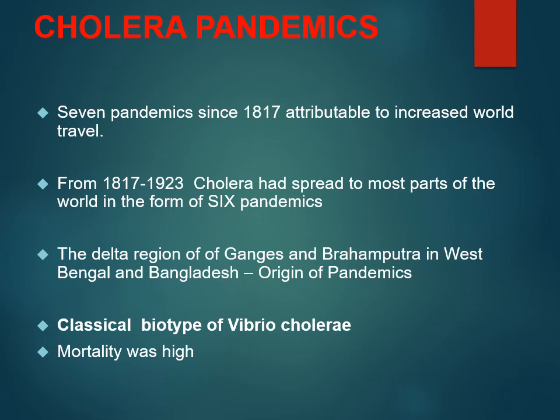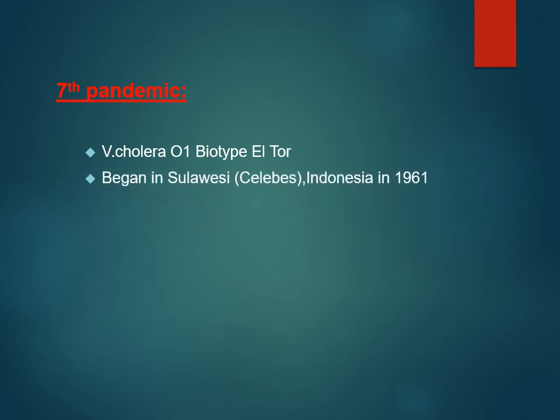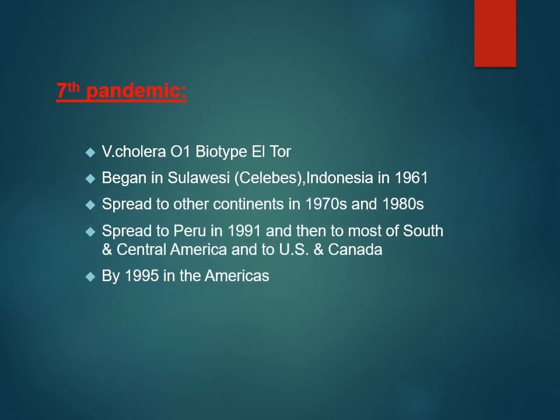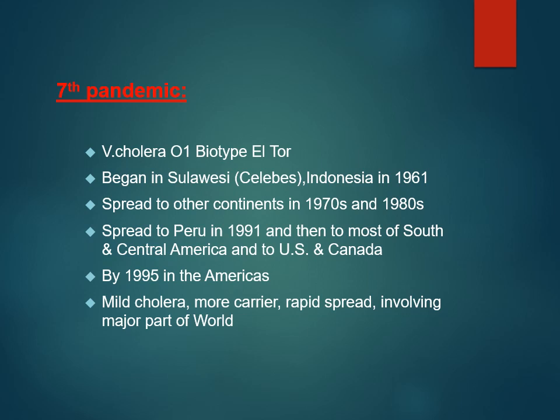The seventh pandemic was due to the El Tor biotype — the six previous pandemics were due to the classical biotype, but the seventh was due to El Tor. This pandemic did not start from India; it started from Indonesia in 1961 and spread to other continents including South America, Central America, the US, and Canada. The seventh pandemic was mild in nature — morbidity was very high but mortality was less.